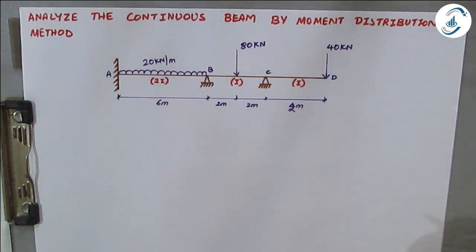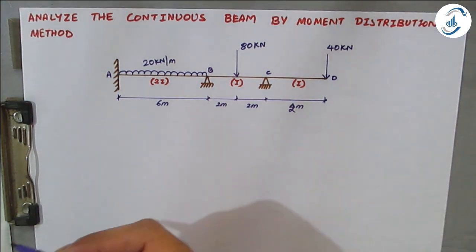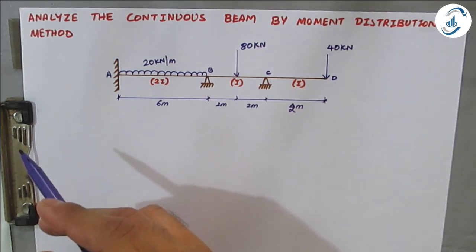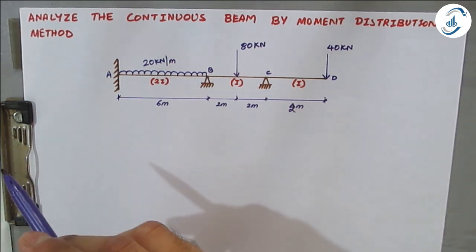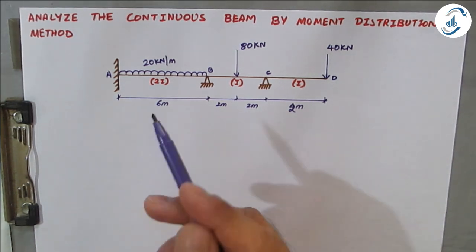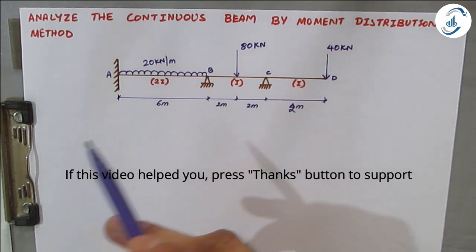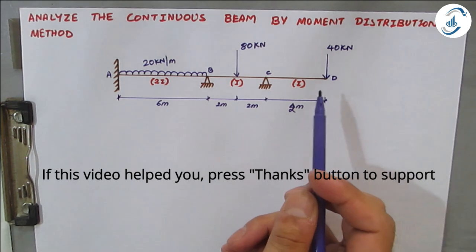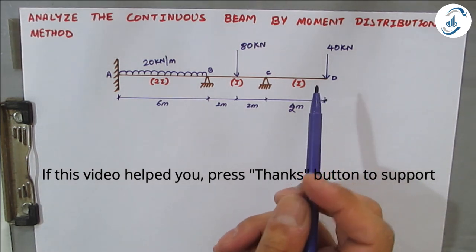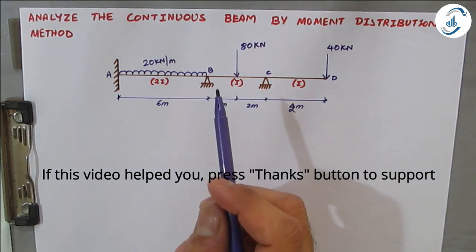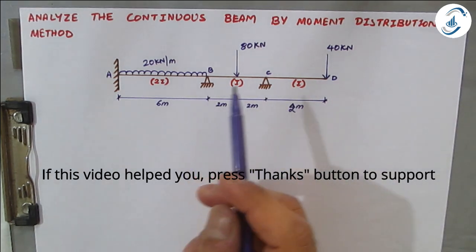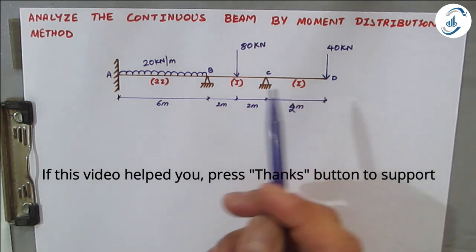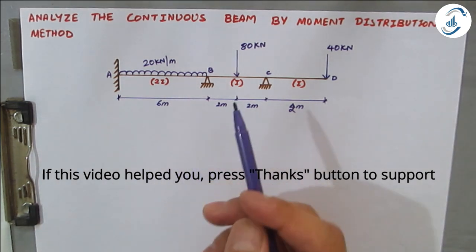Hello friends, welcome back to All About Structural Analysis and Design. Today we will learn how to analyze a continuous beam by the moment distribution method. I have already uploaded two videos on this method. This video is a bit unique because it involves an overhang span, unlike the previous two videos.